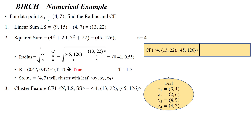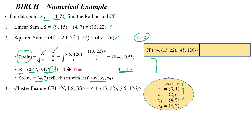We now consider the fourth data point X4 at (4, 7). We calculate the radius, and with 4 data points the radius comes out to (0.47, 0.47). Both are less than 1.5, so X4 is added to the leaf containing X1, X2, and X3. After adding, we update the parent node: n = 4, linear sum = (13, 22), squared sum = (45, 126).